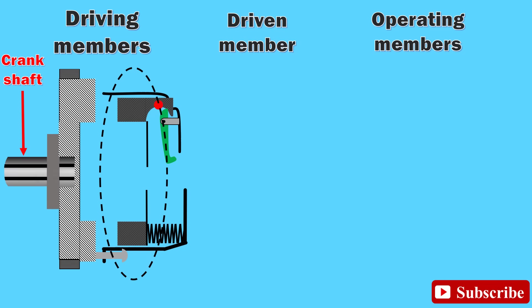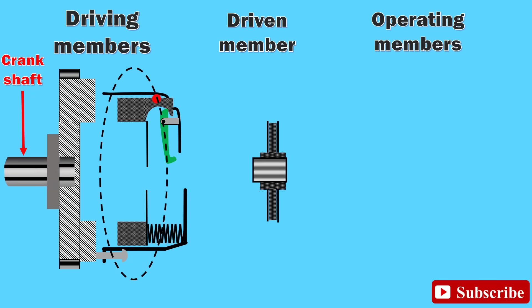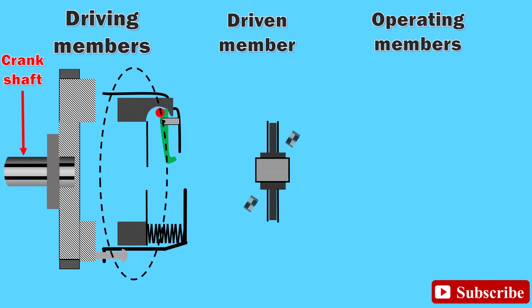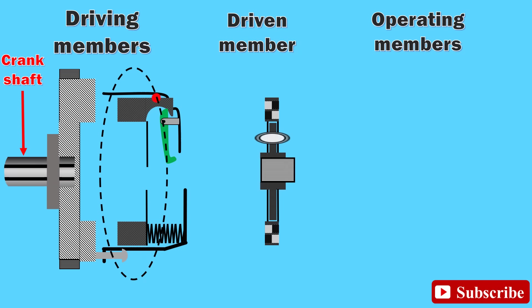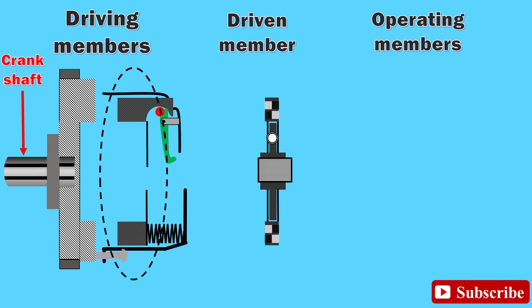Driven member: it is a clutch plate which is free to slide lengthwise on the splines provided on the clutch shaft. It consists of two sets of friction material made of asbestos fibre. The torsion springs are mounted on the hub flange to reduce torsion vibrations and shocks when the clutch plate is gripped between the pressure plate and flywheel.